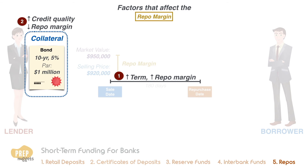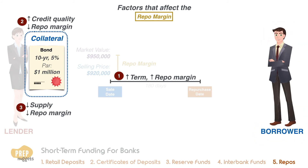Besides quality, the supply and demand conditions of the collateral also matter. Repo margins are lower if the collateral is in short supply or if there's high demand for it, because some lenders want to own a specific bond as collateral and compete by offering a lower repo margin. Lastly, the credit quality of the counterparty matters — the higher the creditworthiness of the counterparty, the lower the repo margin required.